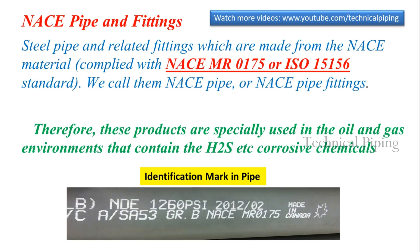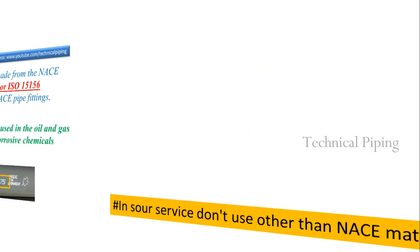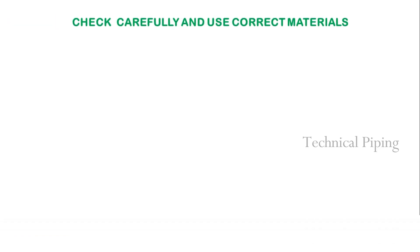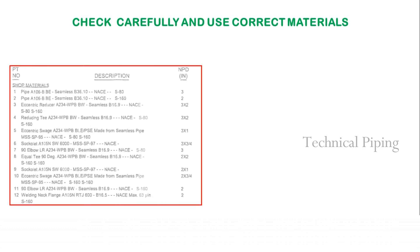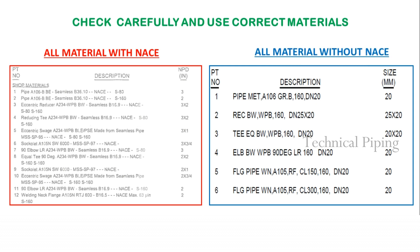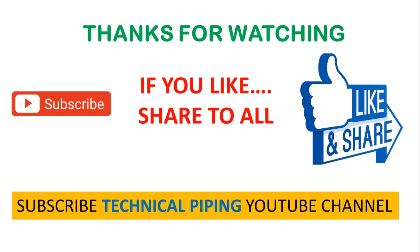This picture shows an example identification mark of NACE pipe, so check carefully before fabrication and use correct materials. Check the bill of materials in the isometric drawing. I hope this video is useful for you.